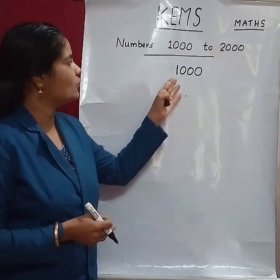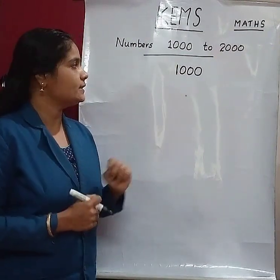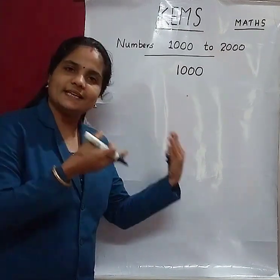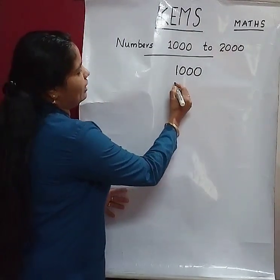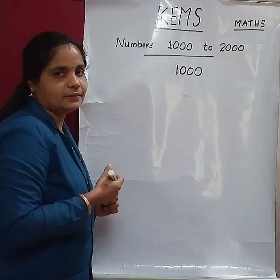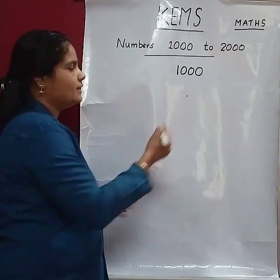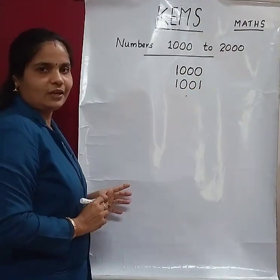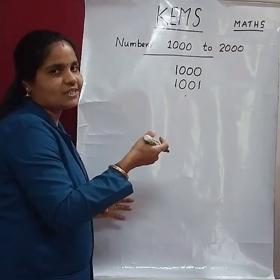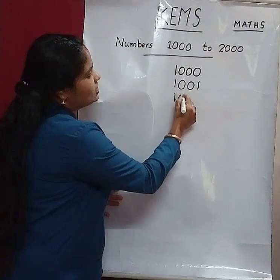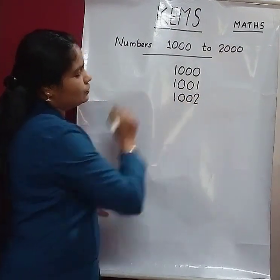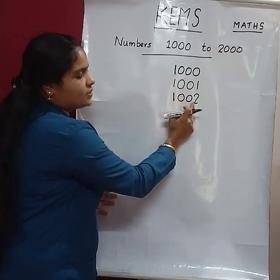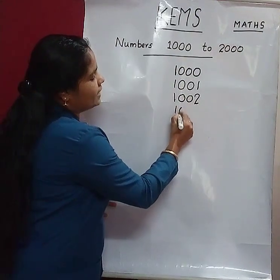Okay, so first number: 1000. Then, the number after 1000 is 1000 and 1 — that is 1001. How to write that number? 1001. Then next number: 1002.